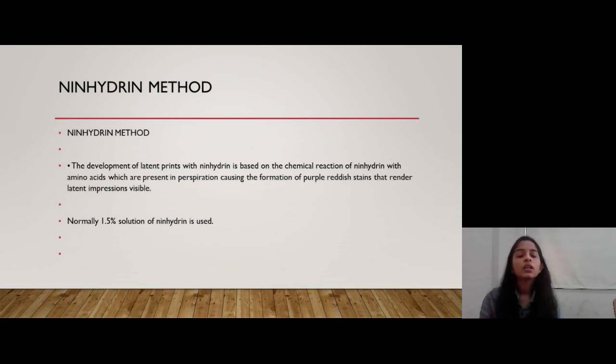Ninhydrin reacts with these amino acids, which are brought out from our sweat, and it gives us purple-reddish stains. What we do, like, we have a latent print on any surface. We'll spray this ninhydrin substance. Of course, that print would include amino acids. So we'll spray this ninhydrin on that and we'll get the latent print. And we'll be easily able to detect the print. For this method, we use 1.5% solution of ninhydrin.